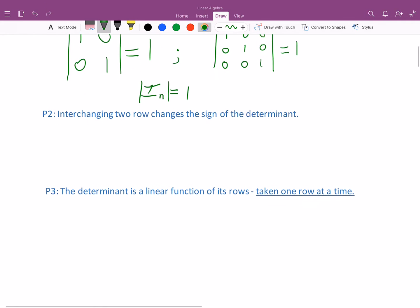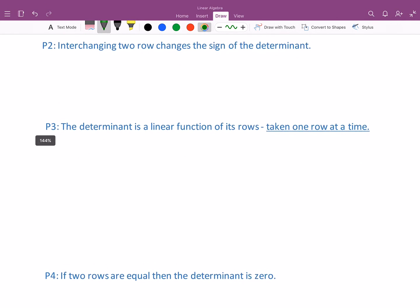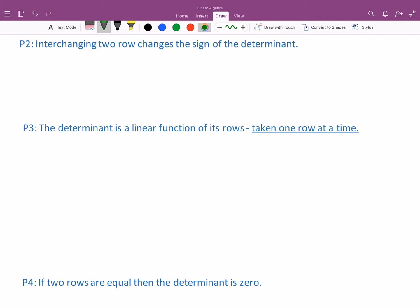This next property says that interchanging two rows in a matrix changes the sign of the determinant. So for example, if I have the 2 by 2 matrix A, B, C, D, and then I write the determinant of C, D, A, B, so what I'm doing here is I'm just interchanging the first and second row, these determinants are related and one is the opposite sign of the other.